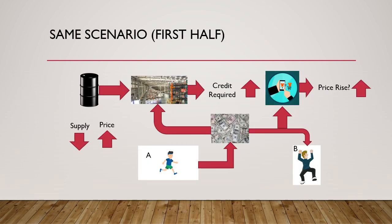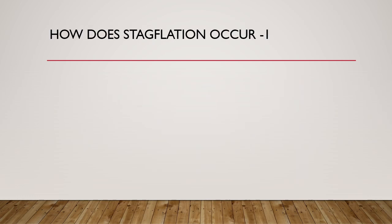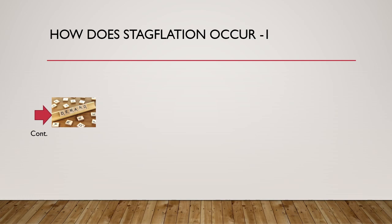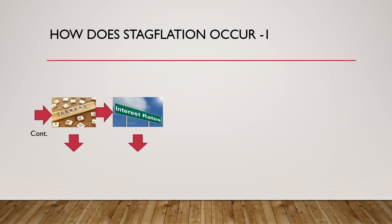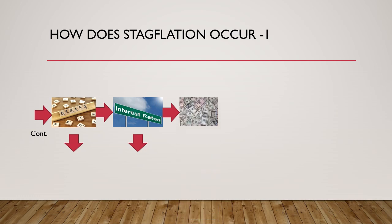However, let's take the same scenario and introduce a new factor. Here, like previously, demand for goods and services comes down because of the price increase. But unlike previously, this time the central bank intervenes in the market and reduces interest rates. As a result, unlike before when credit or money supply reduced, this time because of the interest rate reduction the credit or money supply in the economy either remains the same or more likely increases.